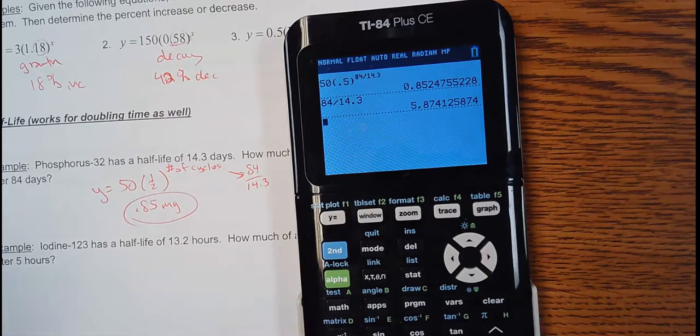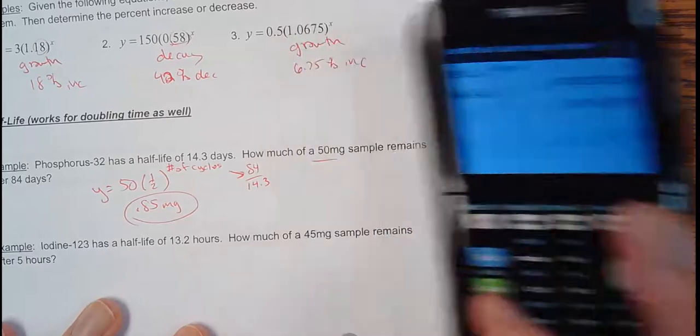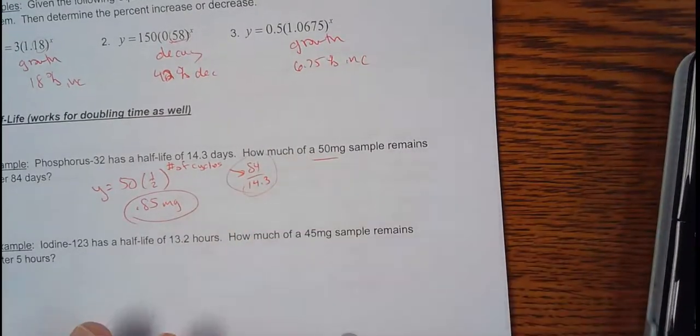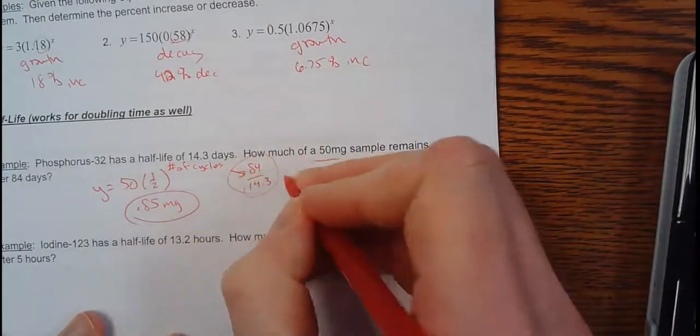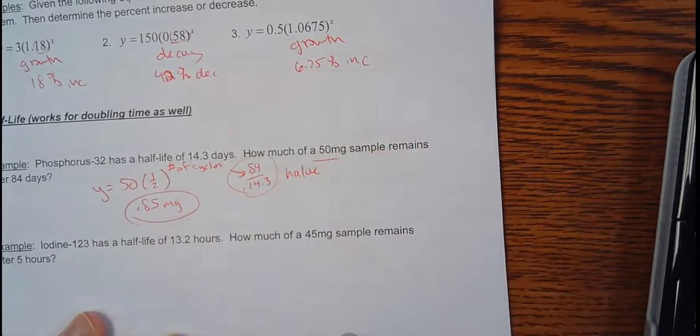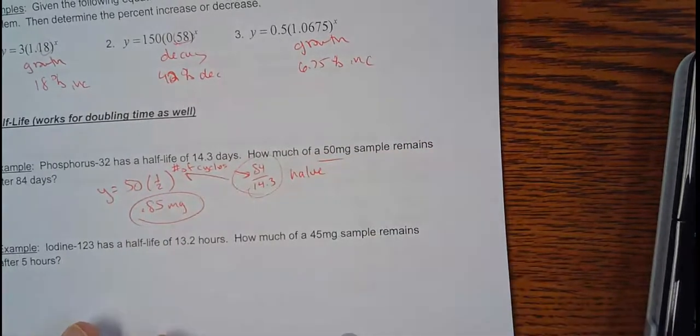Half of 50 is 25. Half of that is 12 and a half. Keep cutting it in half. I did that six times. There's not a lot left. But the number of half cycles. And the number of times I need to halve it. Halve it. With a V. That is your exponent.